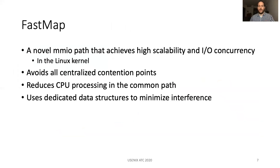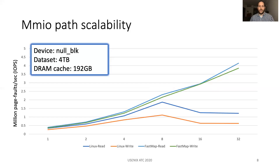In this paper, we propose FastMap, a novel memory-mapped I/O path that achieves high scalability and I/O concurrency. FastMap is implemented entirely inside the Linux kernel. It avoids all centralized contention points, reduces CPU processing in the common path, and uses dedicated data structures to minimize interference among processes. In this figure, we see the previous experiment along with the scalability curves for FastMap. In both read and write cases, it scales well up to 32 threads, achieving 3 times more read I/Os and 6 times more write I/Os.